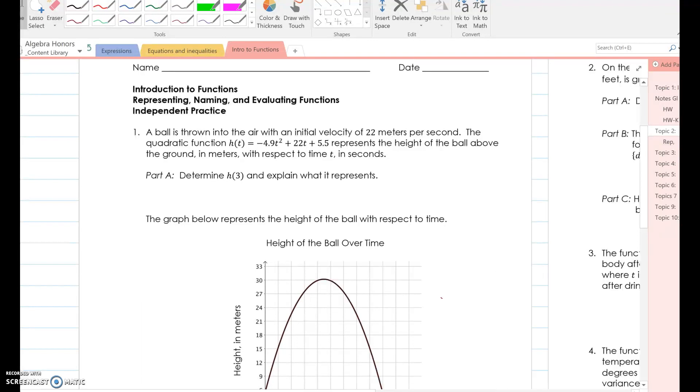So normally I would have you guys read the problem to me, but obviously I can't since I'm not there, so I'll just start. A ball is thrown into the air with an initial velocity of 22 meters per second. The quadratic function h(t) equals negative 4.9t squared plus 22t plus 5.5 represents the height of the ball above the ground in meters with respect to time in seconds.